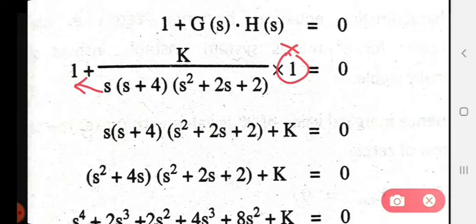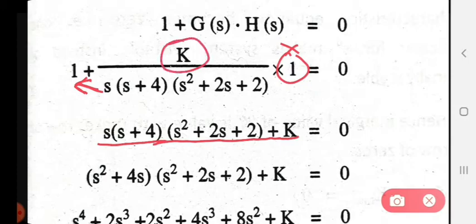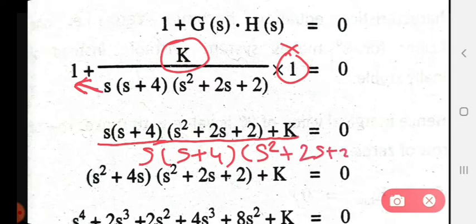Substituting G(s) into the characteristic equation, we multiply out the denominator. The expression s(s+4)(s²+2s+2) becomes the denominator. Taking LCM, the denominator term multiplies through, giving us s(s+4)(s²+2s+2) + K = 0.